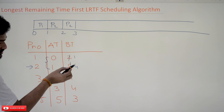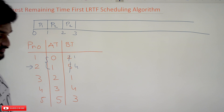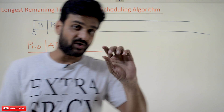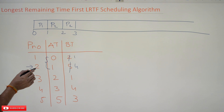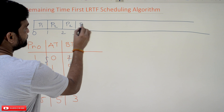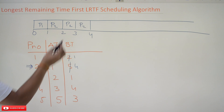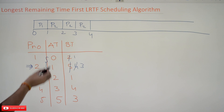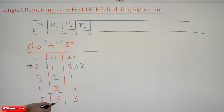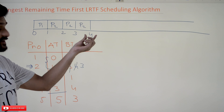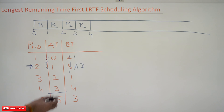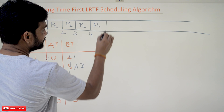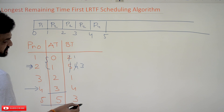By time 3, four processes are available, and two of them have the same remaining time. Whenever there is a tie in remaining time, we choose the process with the smallest process number. So P2 is selected again, running for one unit, leaving it at 3. By time 4, only these four processes have arrived — P5's arrival time is 5, so the time is only 4 units. Among the four, P4 has the longest remaining time, so P4 is chosen.